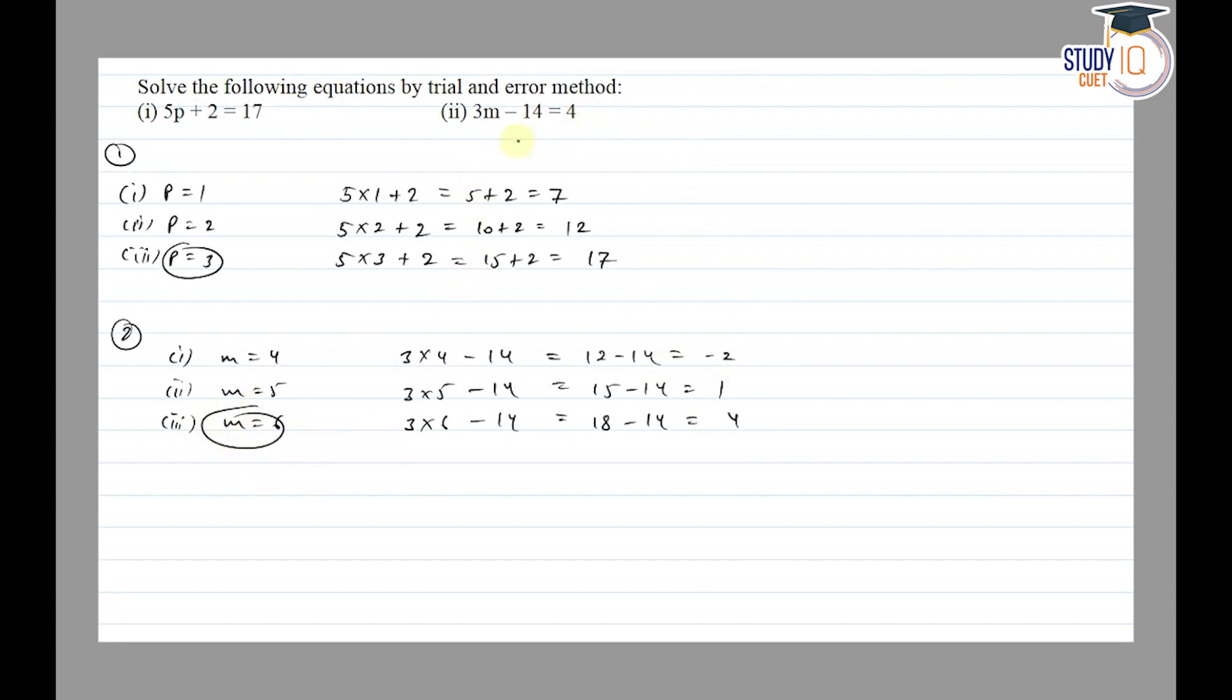is the solution of the equation 3m minus 14 equals 4. So firstly, answer p equals 3, and second part m equals 6. Thank you.